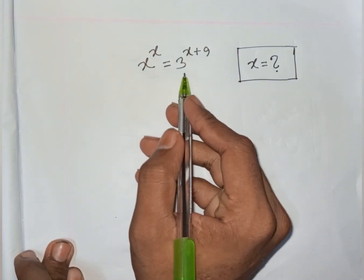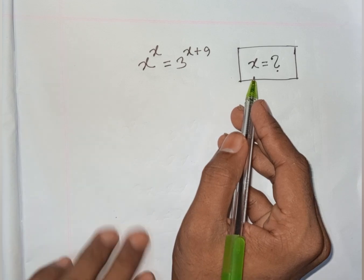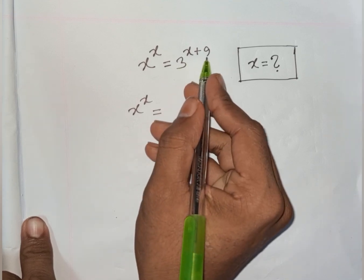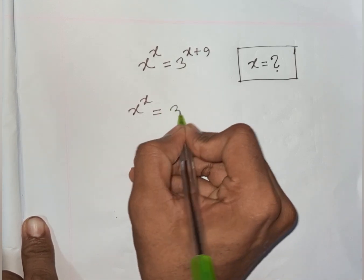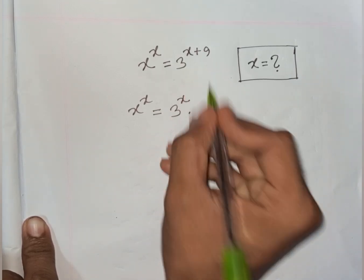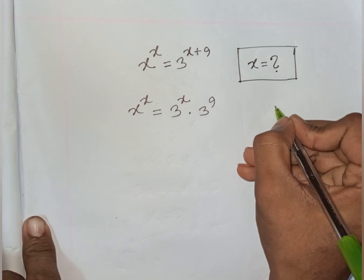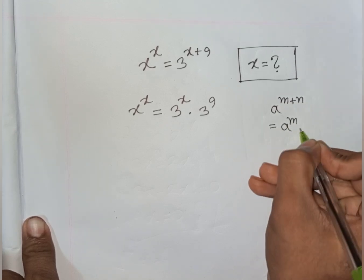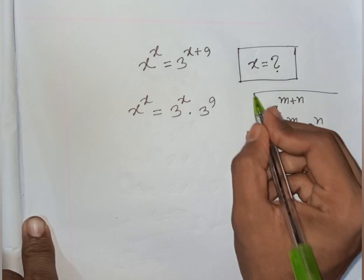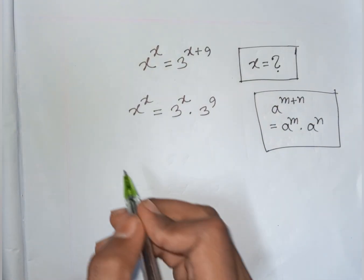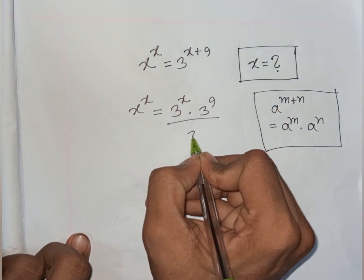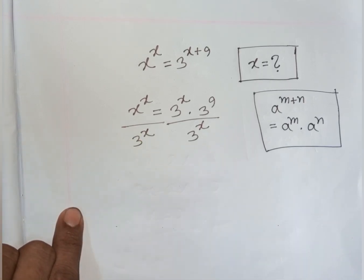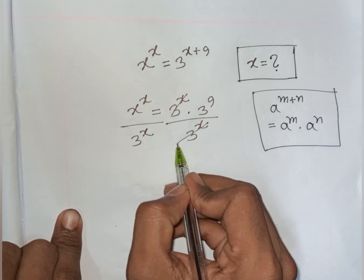Now the second problem: x power x equals 3 power of x plus 9. Find the value of x. We have x power x equals 3 power of x plus 9, which can be written as 3 power x times 3 power 9, using the exponential rule a power m plus n equals a power m times a power n. Then divide both sides by 3 power x.